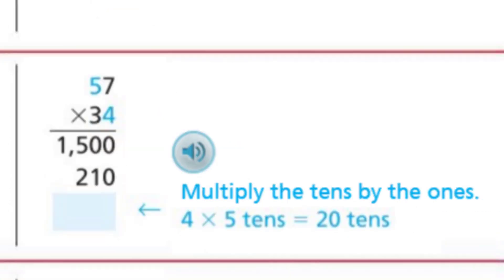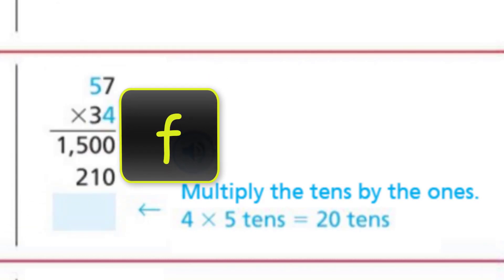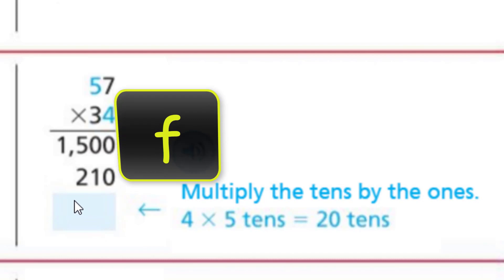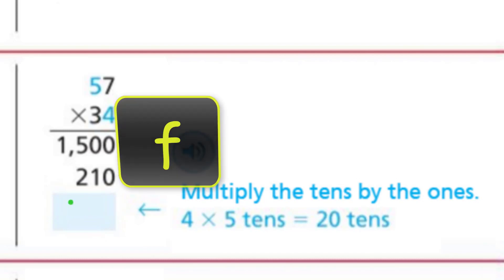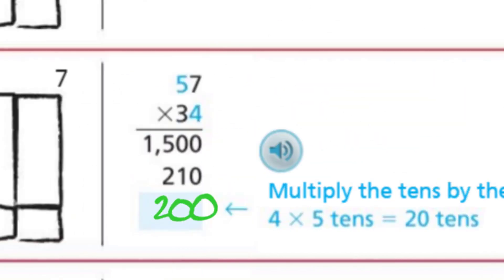Step three: now it says we're going to multiply the tens by the ones, because we hadn't done that one yet. We have the four times the five tens, which happens to be 20 tens. And 20 tens is the same as 200. We'll do this one in green.